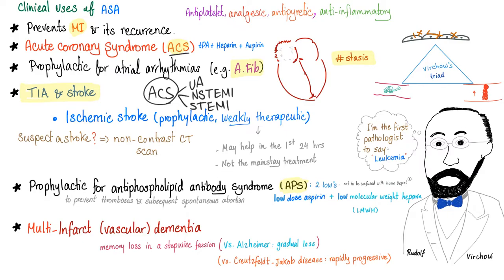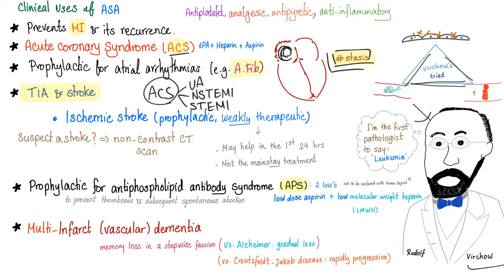Aspirin is prophylactic for atrial arrhythmias such as AFib. In atrial fibrillation, your heart is supposed to pump blood but your atrium just fibrillates. Atrial fibrillation is one of Virchow's triad which will lead to blood coagulation and thrombosis. So atrial fibrillation can lead to blood clots — give aspirin to prevent that. For acute coronary syndrome, we give tPA plus heparin plus aspirin — combination therapy.